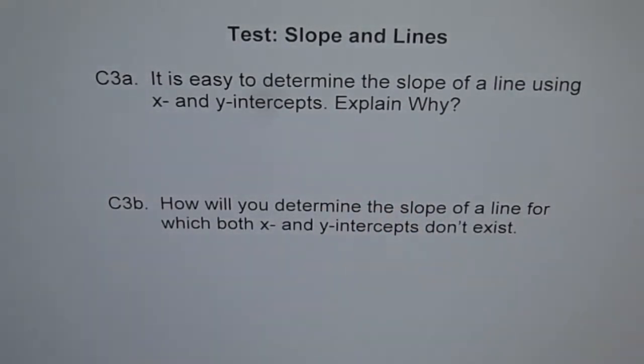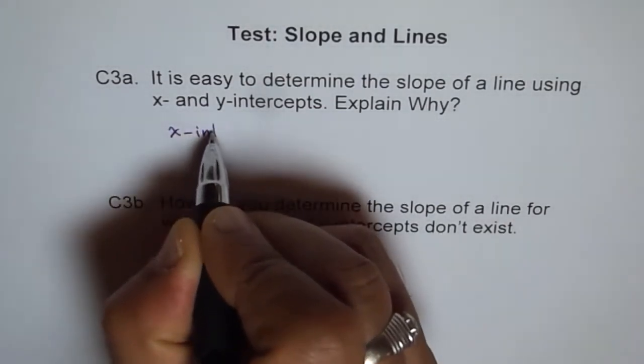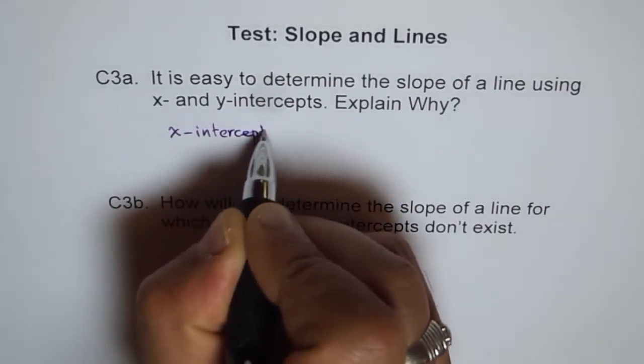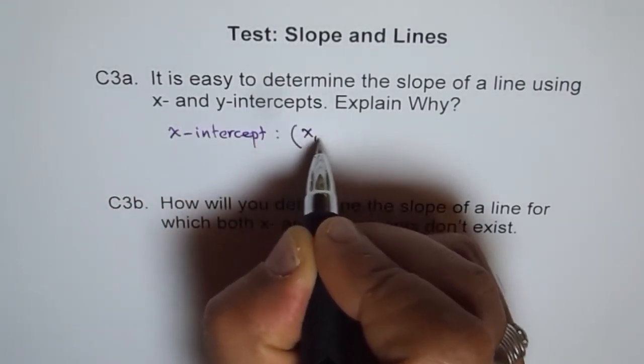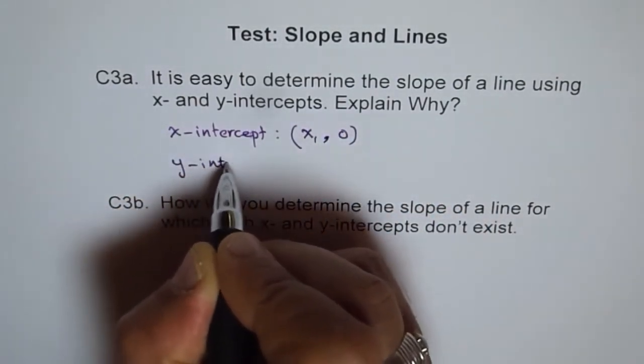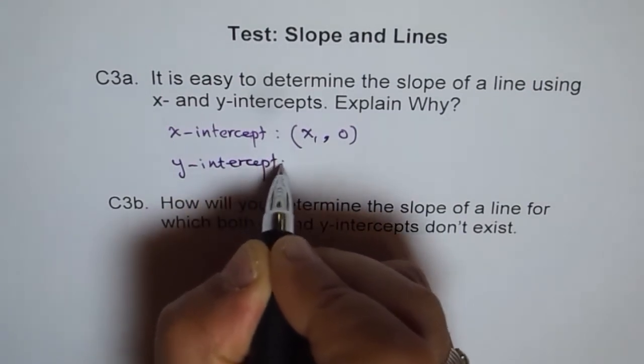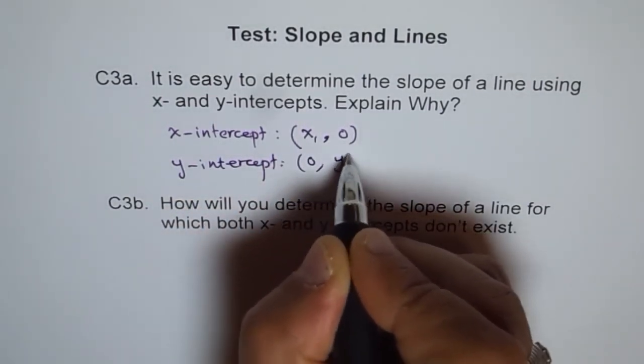x-intercept is a point where y-value is 0. Do you understand? So if I have x-intercept, then it will be a point like some x-value, let's say x1, 0, right? And how about y-intercept? y-intercept will have 0 value for x and some value for y, correct?